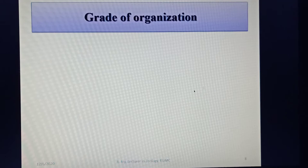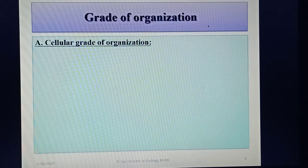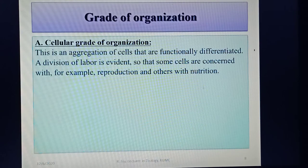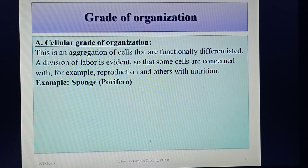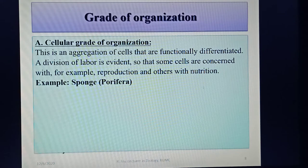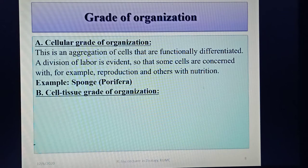Let's start with the first basis: grade of organization. On the basis of grade of organization, animals are classified first into cellular grade of organization. This is an aggregation of cells that are functionally differentiated, where division of labor is evident — some cells are concerned with reproduction, others with nutrition. The example is animals belonging to phylum Porifera, specifically sponges.